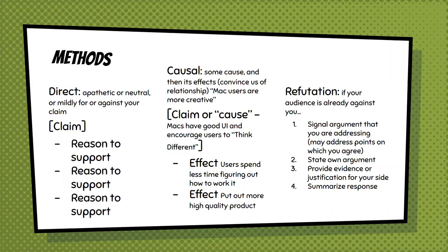And then refutation: if your audience is already against you, you signal the argument that you are addressing and address some points on which you may agree. Show them the places where you agree with them — because if you have no places of agreement, it might not be worth talking to them. People who are very dogmatic, people who are zealots — it's probably not worth getting into that argument; we tend to just let those people be.